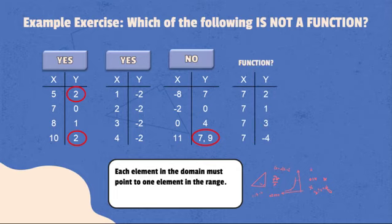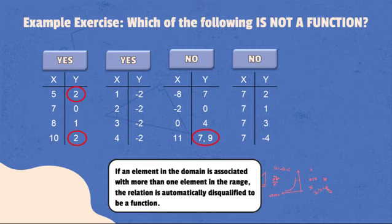How about the fourth example? Function or not? No, this is not a function. If an element in the domain is associated with more than one element in the range, the relation is automatically disqualified to be a function.